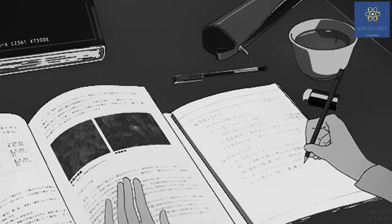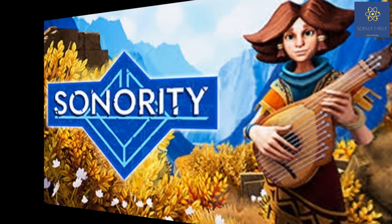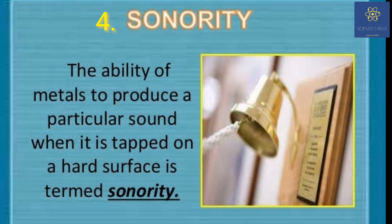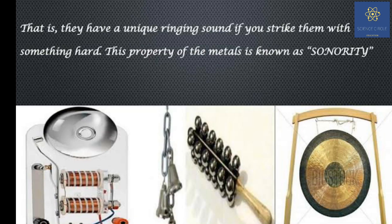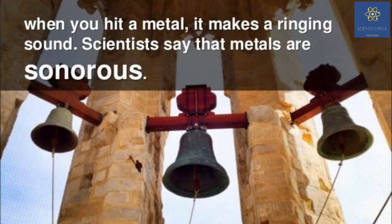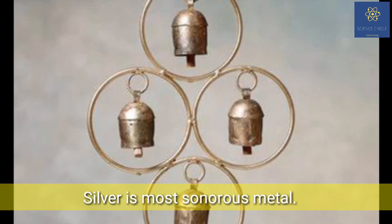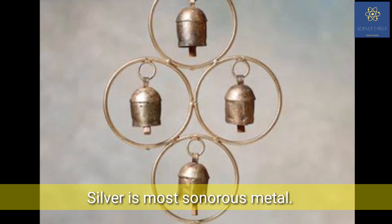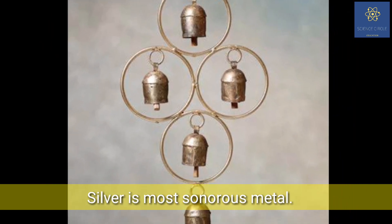Next is sonority — the property to produce a ringing sound when struck. Some metals are sonorous in nature and are hence used in making various types of musical instruments. All non-metals are non-sonorous. School bells and temple bells are made of an alloy of copper and tin. Silver when struck produces a very acute sound and is the most sonorous metal.